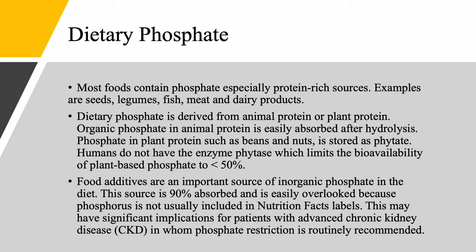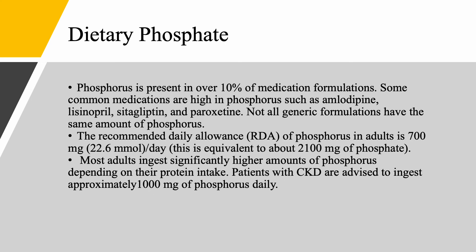Food additives are an important source of inorganic phosphate in the diet, and it is 90% absorbed. This can be easily overlooked because phosphorus is not usually included in nutrition facts labels. This has significant implications for people who need to restrict their phosphate, like those with advanced chronic kidney disease — you would need the help of renal dieticians to guide the patient. Phosphorus is present in over 10% of medication formulations. Some medications are high in phosphorus, like amlodipine, lisinopril, sitagliptin, and paroxetine. A broad recommendation cannot be made because not all generic formulations have the same amount of phosphorus.